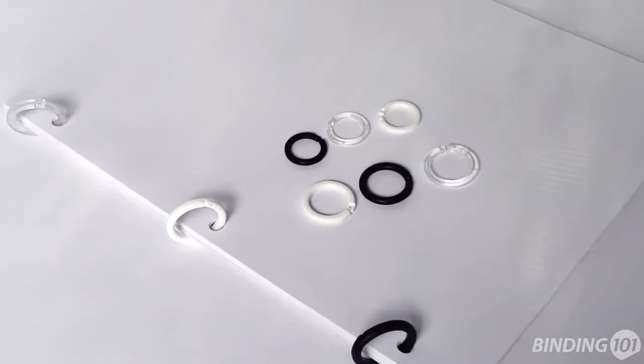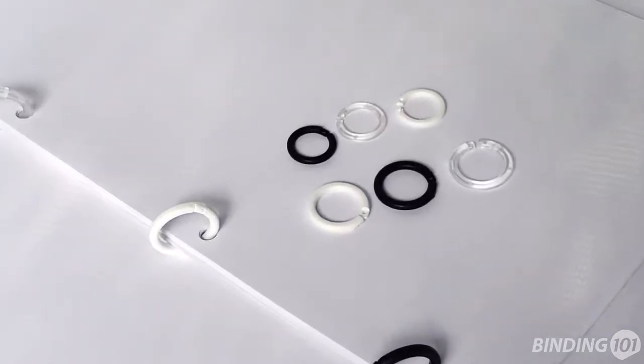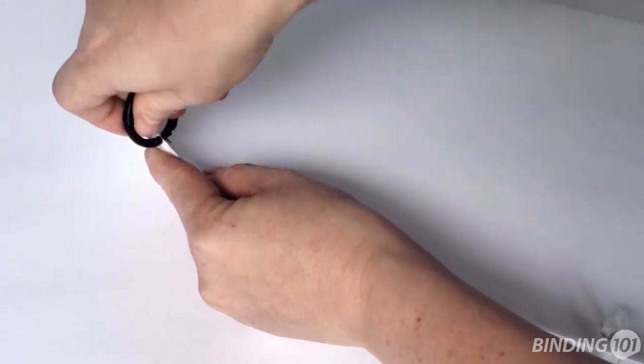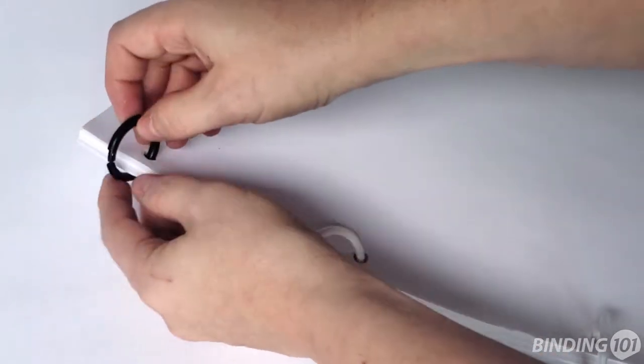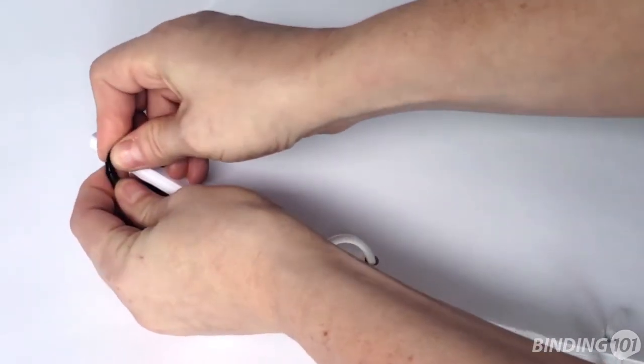Plastic snap lock binding rings are an inexpensive and fast way to bind together loose sheets of paper, albums, small swatches, crafting, point of purchase and retail displays, and so much more.